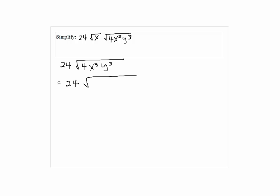Now, notice that the 4 is 2 squared, and x cubed is written as x squared times x, and y cubed is written as y squared times y.